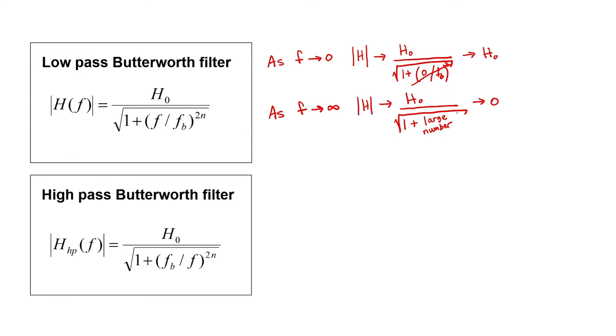We can thus clearly see that this transfer function describes a low-pass filter because it passes low frequencies and it blocks high frequencies.